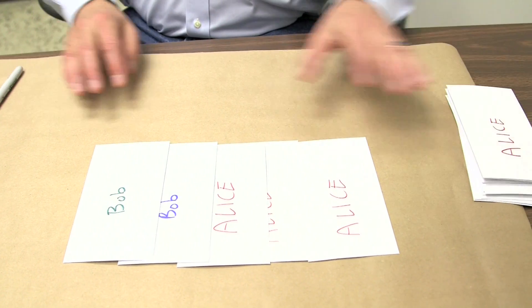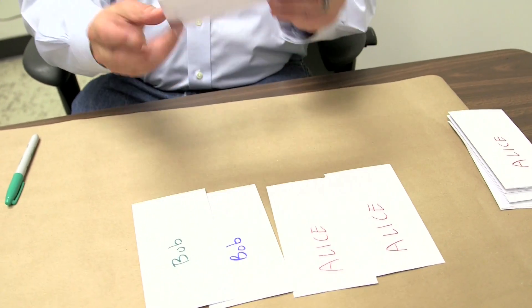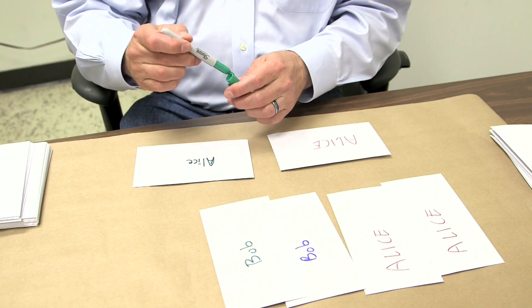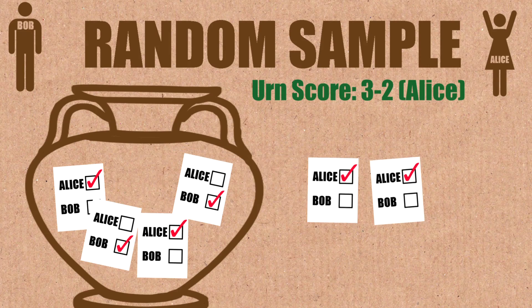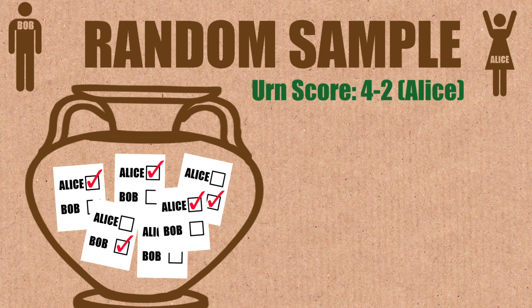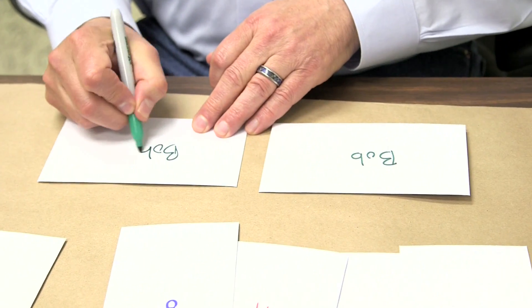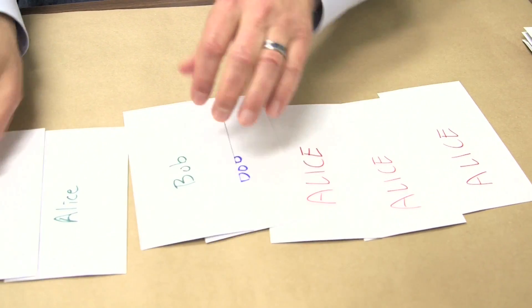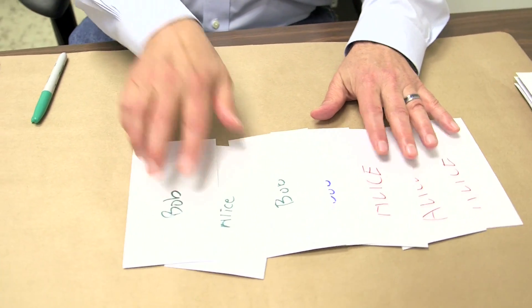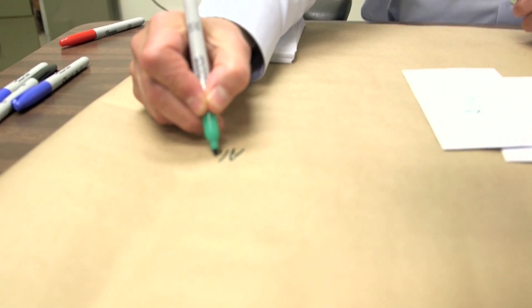We had 16 originally, so we repeat this process. Draw another one at random — maybe I draw an Alice — so I put another Alice. I pick one out and put it back together with a copy of it. So now I've got six ballots: four to two. I continue this process, picking one at random, copying it, until at the end of the Polya's Urn process we've got 16 again. We can pretend that's the full cast set of ballots, see who won, and put on our chart: Alice won that simulation.